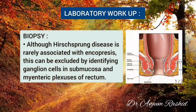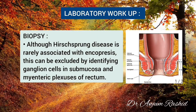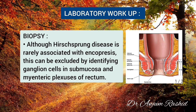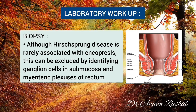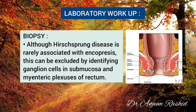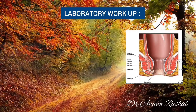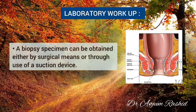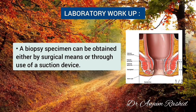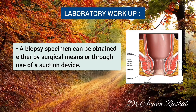Regarding biopsy: although Hirschsprung disease is rarely associated with encopresis, it can be excluded by identifying ganglion cells in the submucosa and myenteric plexus of the rectum. A biopsy specimen can be obtained either by surgical means or through use of a suction device.